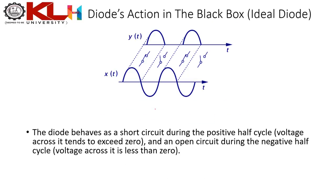Drawing conclusions from the previous analysis: let x(t) be the step-down output with a 4 V peak, and y(t) be the output of the diode circuit. In the positive half cycle, x(t) = y(t), which means in the positive half cycle there is effectively a short circuit present.